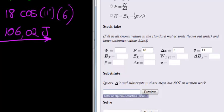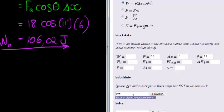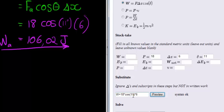What is the formula? Okay, when we substitute, work is equal to 18 times cos of 11 times displacement of 6.